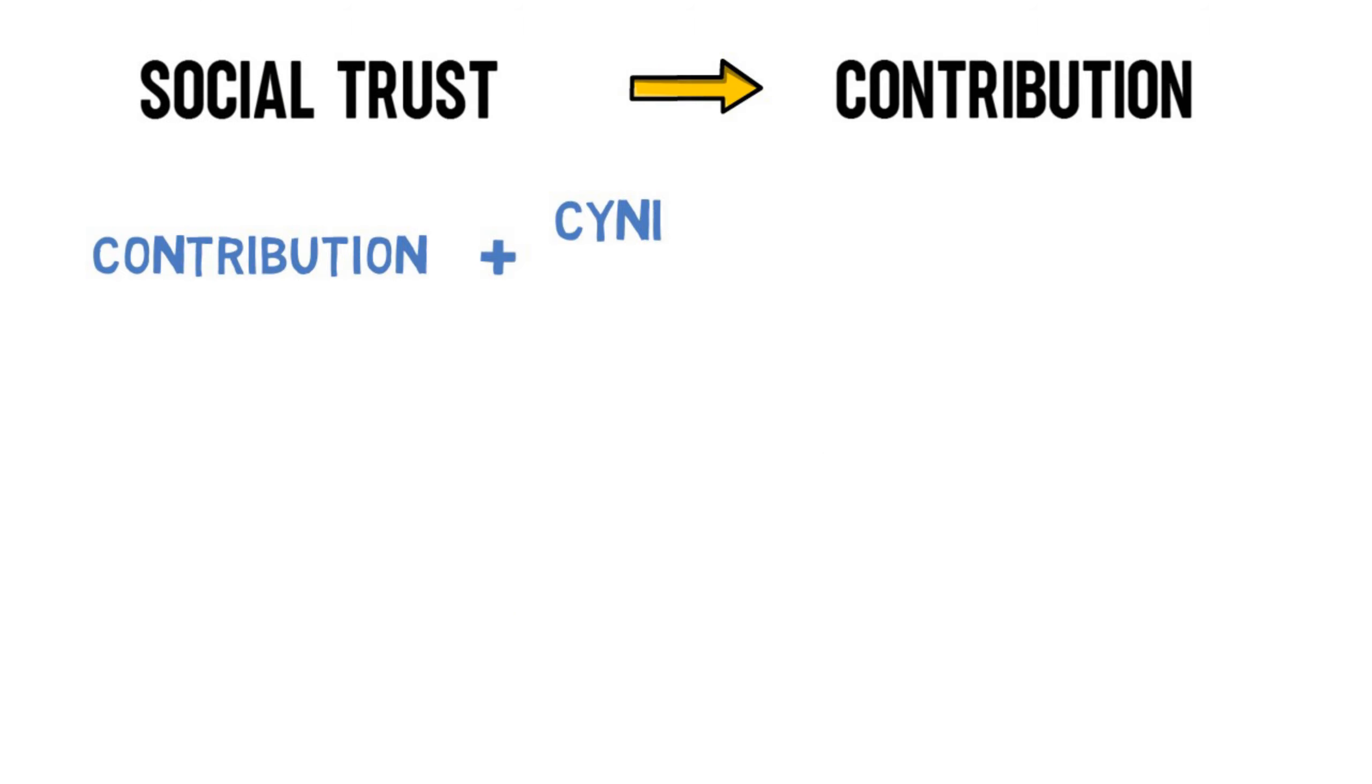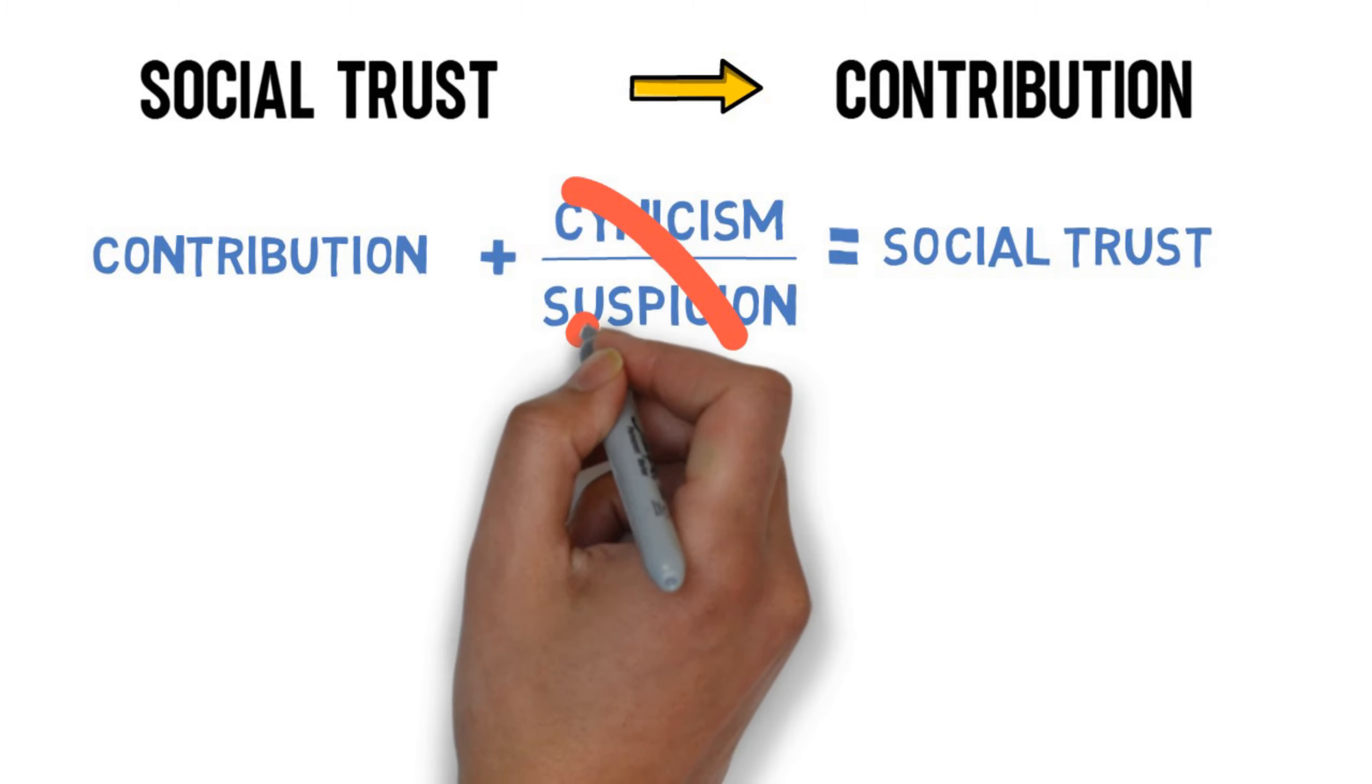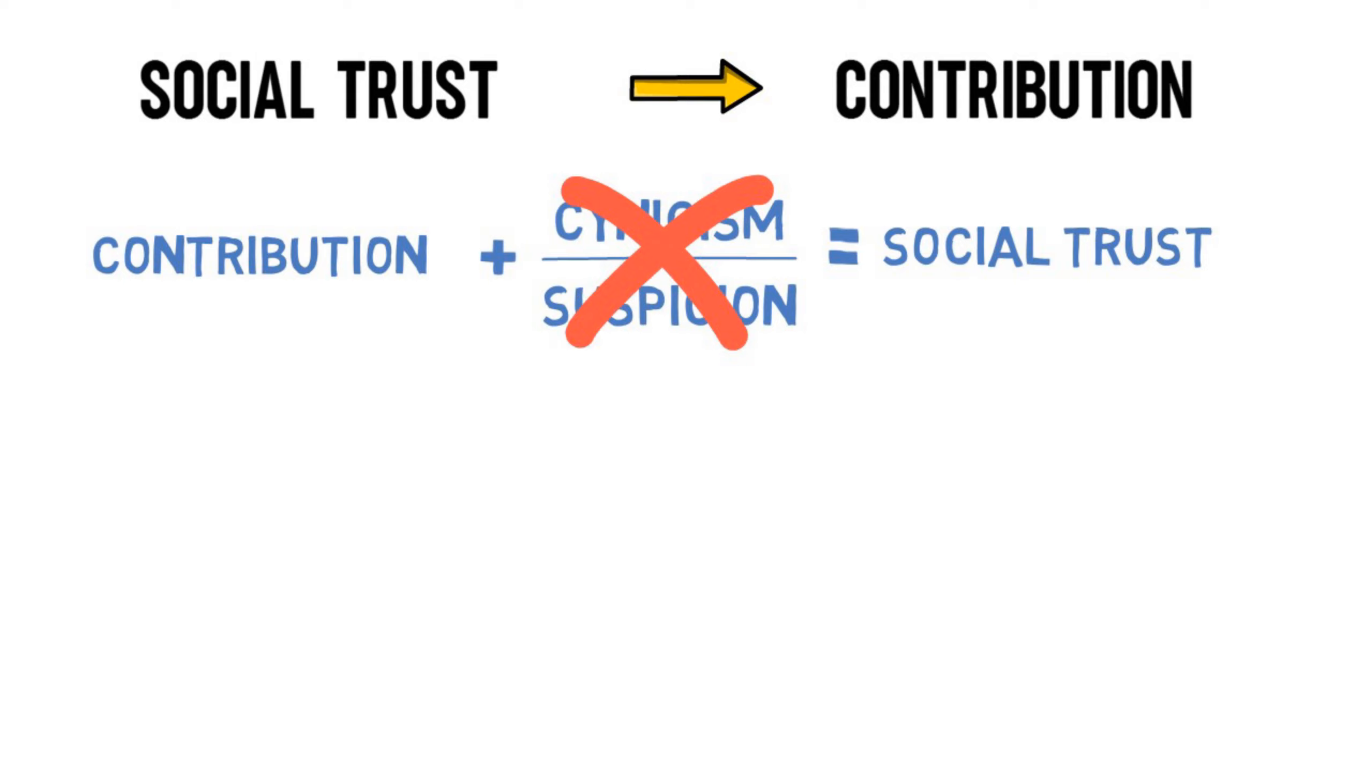Social trust increases when you create and give value to others and to society itself. When you give something to society, cynicism and suspicion can be removed from the equation. Frequently, these actions inspire others to contribute to society as well.